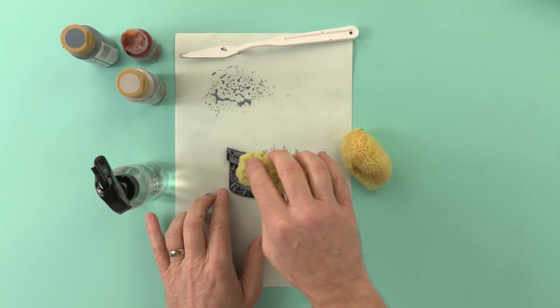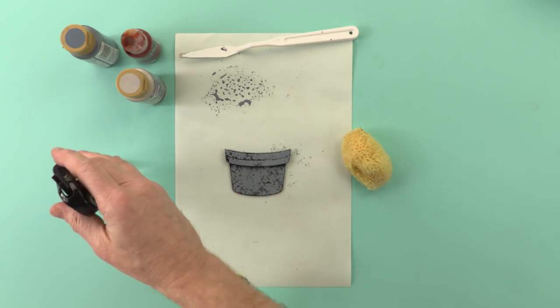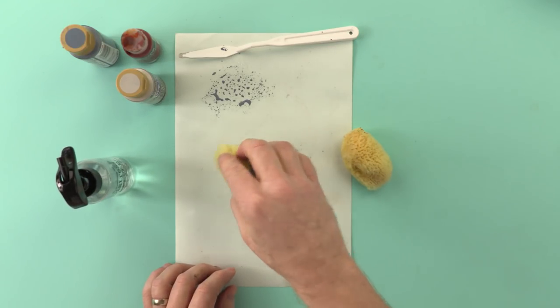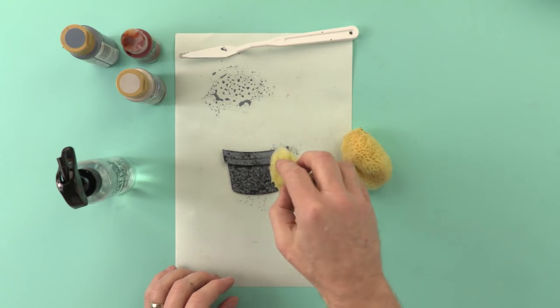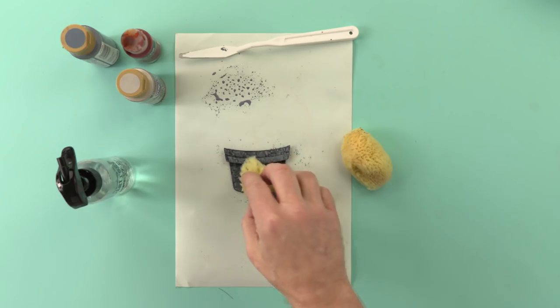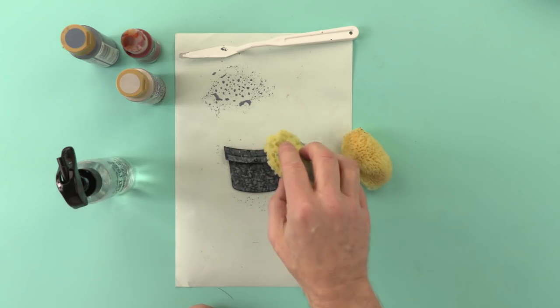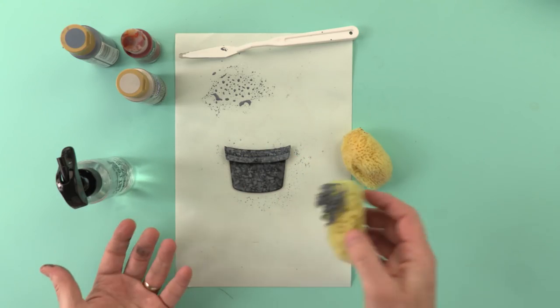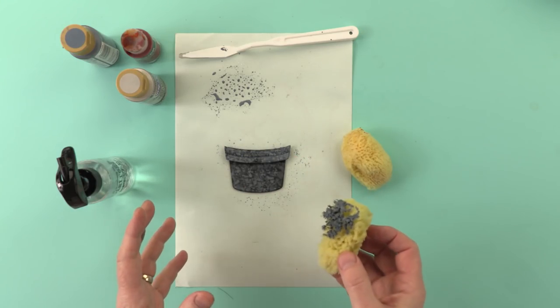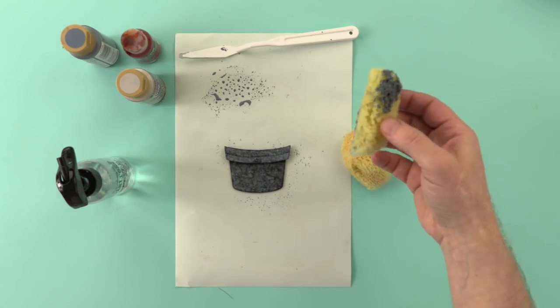There's lots of gaps in between because next what I want to do is spritz directly onto that planter and start to lift some of that off. That water and the consistency of the paint gives it that lovely mottled effect. If you think you want more you can add more. If it doesn't work out how you want it, paint it black, start again. That's the beauty of these kind of techniques.